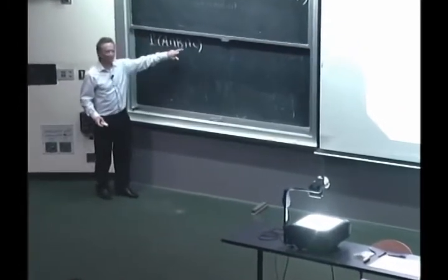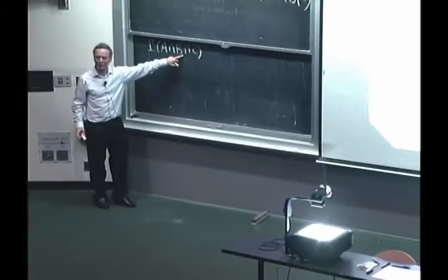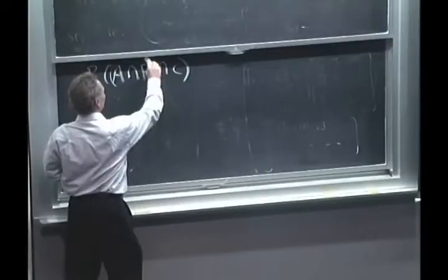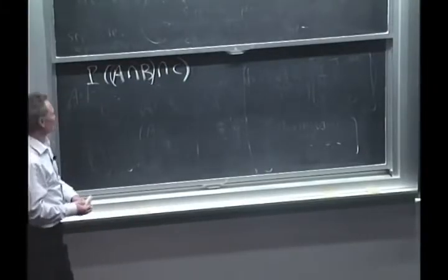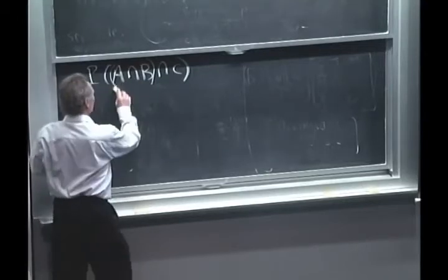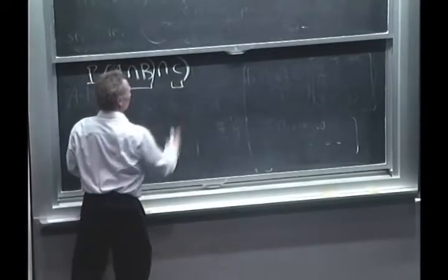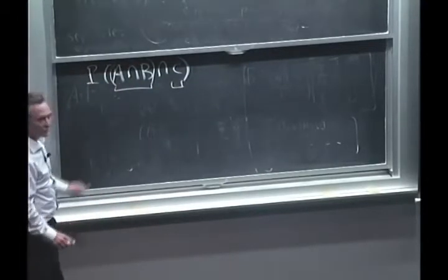Unfortunately, here we have the probability of three things. What can I do? Well, I can put a parenthesis in here and think of this as the probability of this and that, and apply our definition of conditional probabilities here.